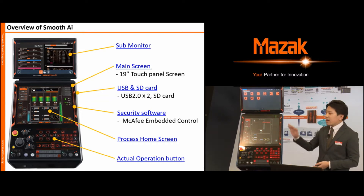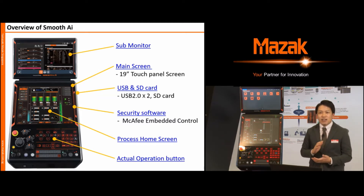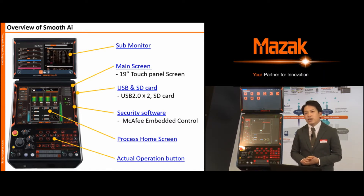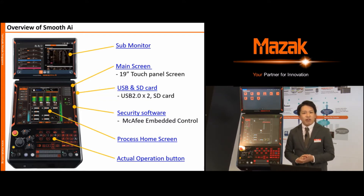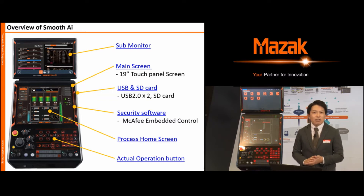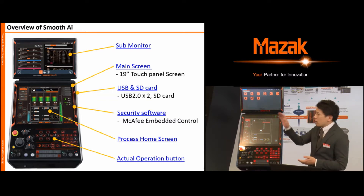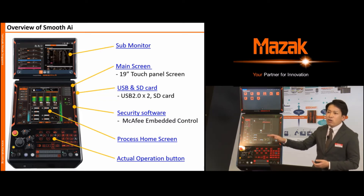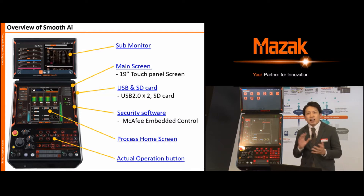Let's look at the screen again. We call this the Process Home Screen. Information can be easily read from this screen — for example, the machine state, progress of machining, machining running time, and access road. You can also navigate easily around the screen. When you press the program button, icons related to program functions appear, so you can easily access any function.